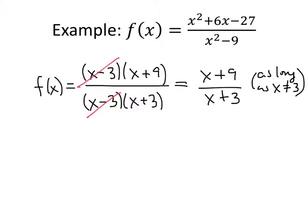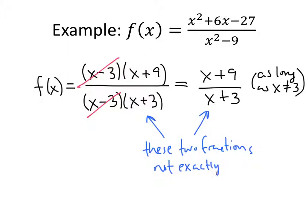I have to make that distinction because those two fractions are not exactly the same — they're mostly equal, but the difference is at x equals 3. I can plug x equals 3 into the simplified fraction and get a number, but if I try to plug x equals 3 into the original fraction, I'd be dividing by 0 because of the factor of x minus 3 in the denominator. That's why we don't have an asymptote at x equals 3.